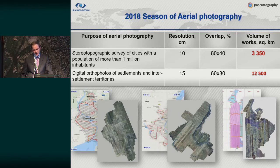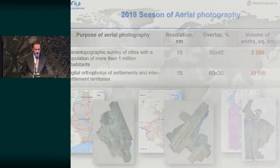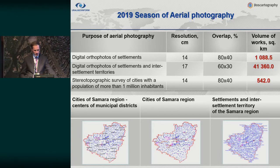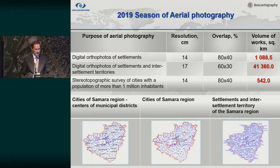In 2019, we carried out aerial photography projects to build digital orthophotos of settlements at 1:2,000 scale. We achieved 14 cm resolution with 80 by 40 overlap for more than 1,000 square kilometers. For settlements, villages, and inter-settlement territories at 1:2,000 and 1:10,000 scales, we used 60 by 30 overlap for more than 40,000 square kilometers. Also this year, we captured Samara — a city with over 1 million population — covering more than 500 square kilometers at 14 cm resolution with 80 by 40 overlap.